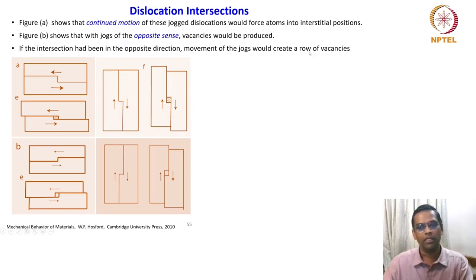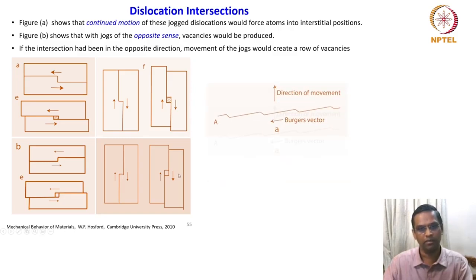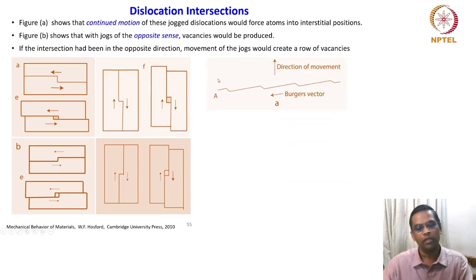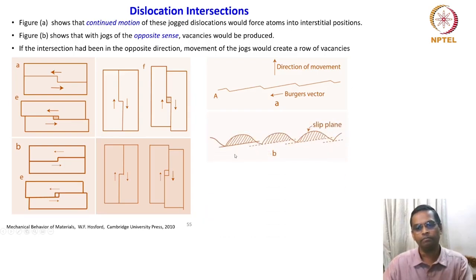All of them would result in a line of vacancies if this kind of ledge formation continues to move in the opposite direction. To give an idea of what happens at a boundary like this — this is a ledge with a dislocation boundary — it forms a ledge similar to what is shown. These positions will get either locked by interstitials or will create a vacancy, meaning the dislocation gets pinned down at all these points.